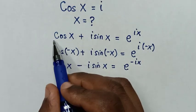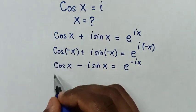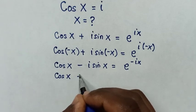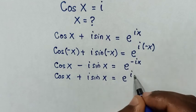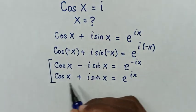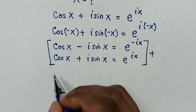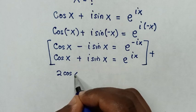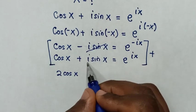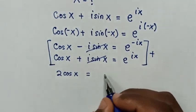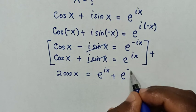Then we'll add this original equation with this second equation. So when we add them, it will be cos of x plus i sine of x equals e to the power of ix. So we'll add these two equations. Cos of x plus cos of x is 2 cos of x. Then negative i sine of x plus positive i sine of x is 0, so those cancel. It is equal to e to the power of ix plus e to the power of negative ix.